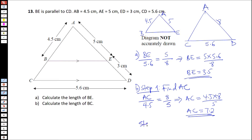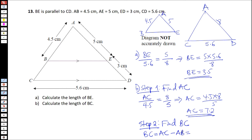Step two: we can now find BC. BC equals AC minus AB, so that's 7.2 minus 4.5, which gives us 2.7 centimeters. That's how you work out number 13.